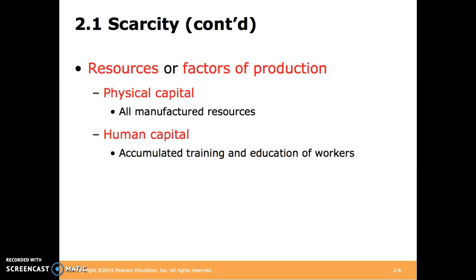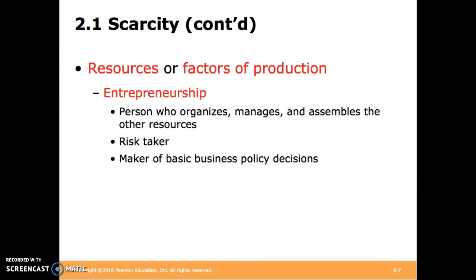Human capital is accumulated training and education of workers. For the farmer, this would be his knowledge of planting times, when to harvest, how to operate any tractors or machinery that he has, and who to sell it to. Entrepreneurship is a person who organizes, manages, and assembles the other resources. They're the risk taker and maker of basic business policy decisions. In the case of the farmer, this would be the farmer, if he owns his farm outright, or possibly the investor who backs the farmer, if the farmer doesn't own the farm.